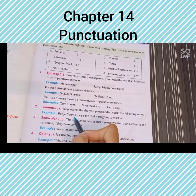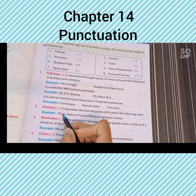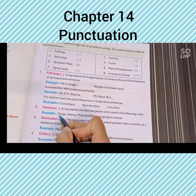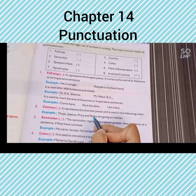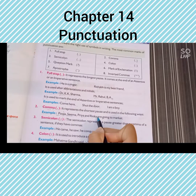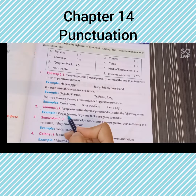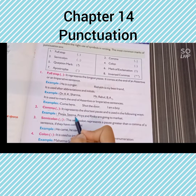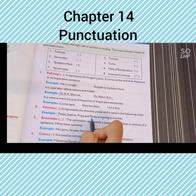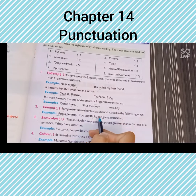Example: Pooja, Seema, Priya, and Rinki are going to the market. So, यहाँ जो चार girls के नाम लिये हैं, उनमें हर girl के नाम के बाद हमने comma लगाया है — Pooja comma, Seema comma, Priya — and Rinki are going to the market. Last one Rinki है, so Rinki से पहले हमने 'and' का use किया है क्योंकि Rinki last one है।